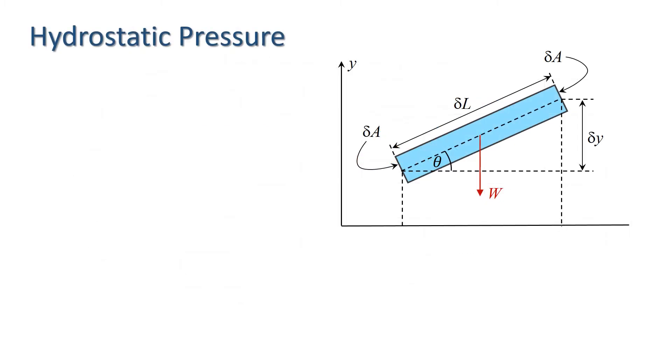Consider an elementary volume of fluid, in this case a cylinder with length delta L, cross-sectional area delta A, and weight W. Since we are interested in how pressure varies with depth, we take this elementary volume to be inclined at an angle theta to the horizontal. As before, the fluid is static, so the sum of the forces on the elementary volume must be zero.